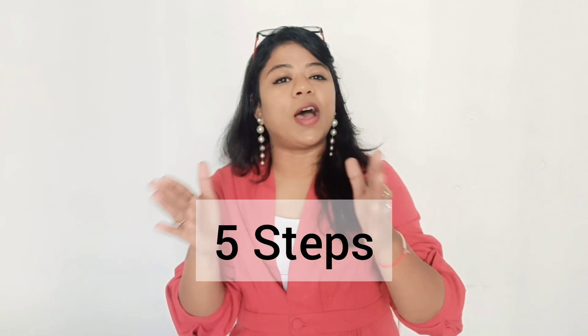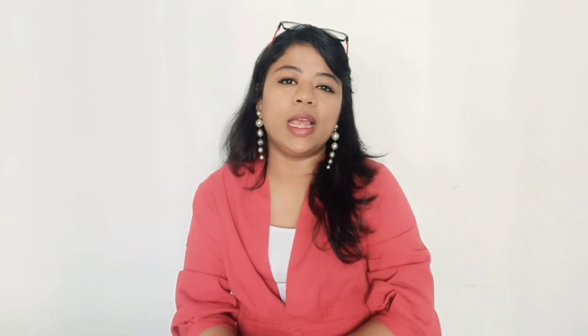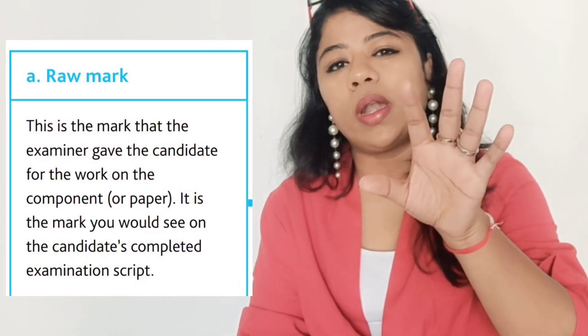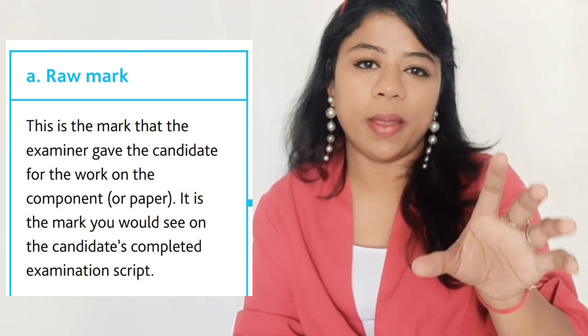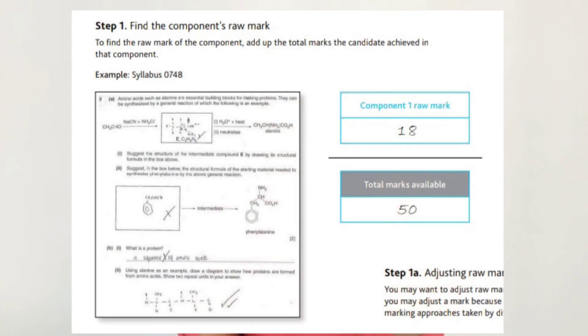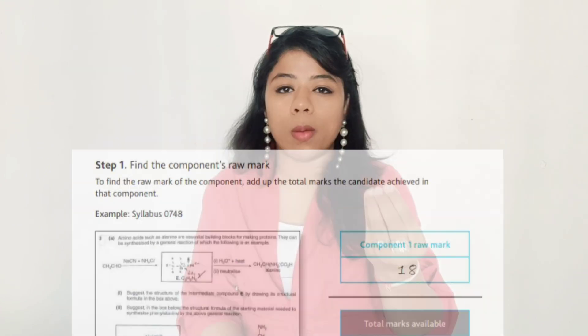Step number one is your raw marks. Raw marks are whatever you have scored in your paper. For example, if you are writing your English paper, whatever your score is — let's say you got 70 marks — those actual marks are called raw marks, i.e., the marks after the examiner corrects your paper.